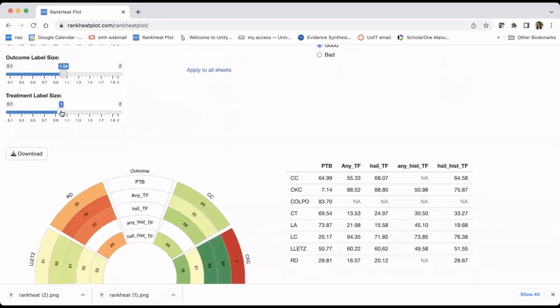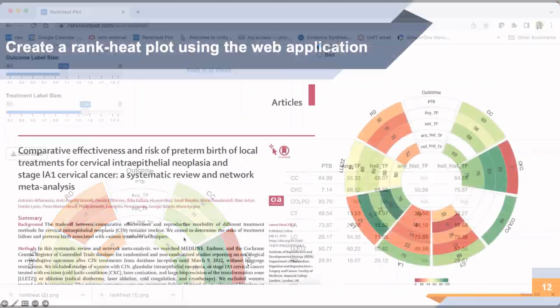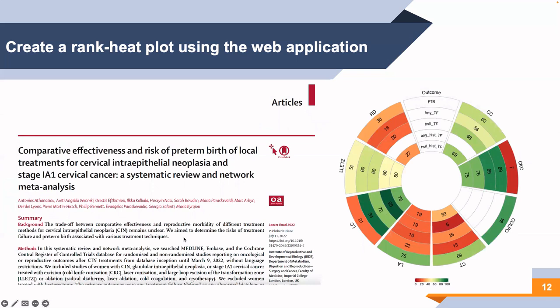Using data from a systematic review on the comparative effectiveness and risk of preterm birth of local treatments for cervical cancer by Athanasiu et al., published in The Lancet Oncology in 2022, the contrast-level data across all studied outcomes were uploaded to the ranking plot tool. We obtained this ranking plot showing the relevant SUCRA values presenting the hierarchy of interventions across five outcomes: preterm birth, any treatment failure, high-grade treatment failure, and so on. In this plot, we can easily see that CKC and laser conization rank among the best interventions across all outcomes apart from preterm birth.